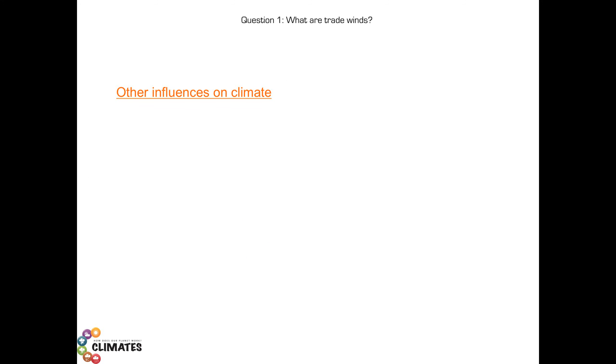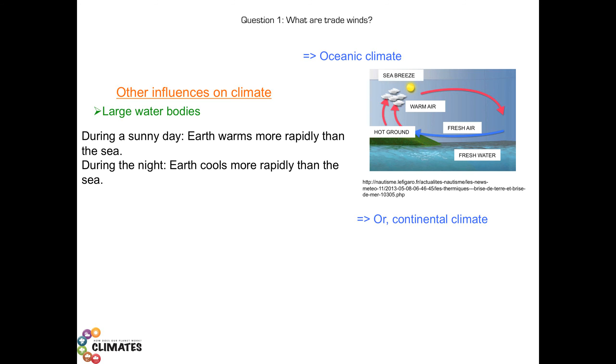Here are other influences on climate. The climate is influenced by the proximity of a large water body, for example an ocean. Here is a figure explaining what happens for a town located near the ocean.